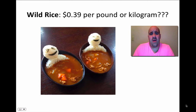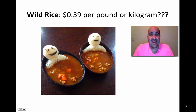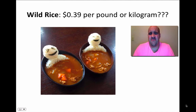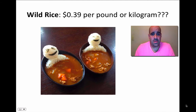An American businessman was selling wild rice to a Japanese customer and quoted him at 39 cents. The Japanese buyer was elated, thinking he was getting rice for 39 cents a kilogram. The American thought he was selling at 39 cents a pound. Since the kilogram is 2.2 pounds, the Japanese buyer was expecting 2.2 times as much rice for his money. We live in a global economy and we have to watch our units when conducting business with people using different measurement systems.